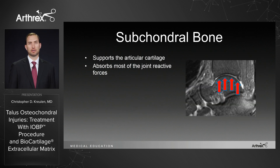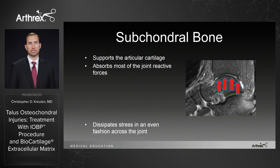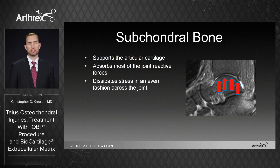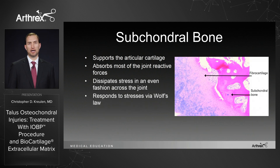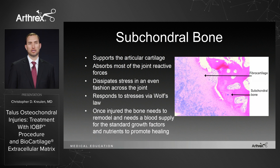So let's review subchondral bone. Subchondral bone supports the articular cartilage. It absorbs most of the joint reactive forces and distributes it throughout the joint. It responds to Wolff's law with force, and once injured, it needs to heal. Therefore, it needs a blood supply and growth factors to promote that healing.